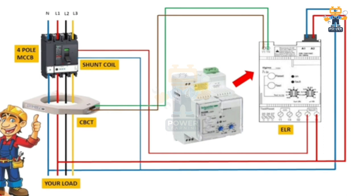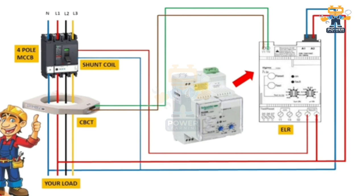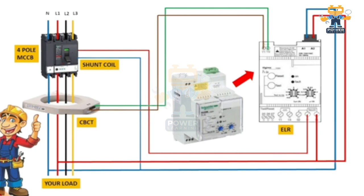Now, how will the breaker be tripped? The breaker needs to trip when the core balance current transformer detects an imbalance — meaning there is a leakage in the cable. Once the CBCT senses this imbalance, it gives a signal to the earth leakage relay.